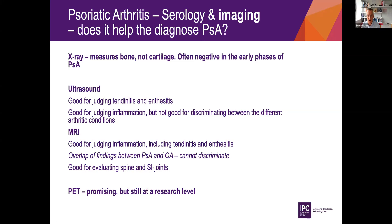And then there's MRI. The problem here is that we have no clear way to distinguish between psoriatic arthritis and osteoarthritis on MRI. However, it is very good at evaluating joints, cartilage, and the deeper layers of tissue.